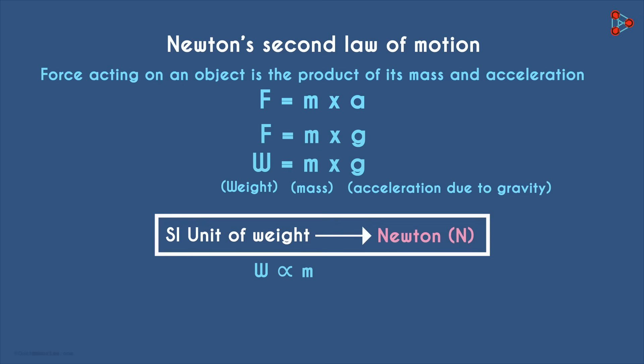Here's the main takeaway from this video. The mass of an object remains constant everywhere, whereas its weight depends on the gravitational force at the location.